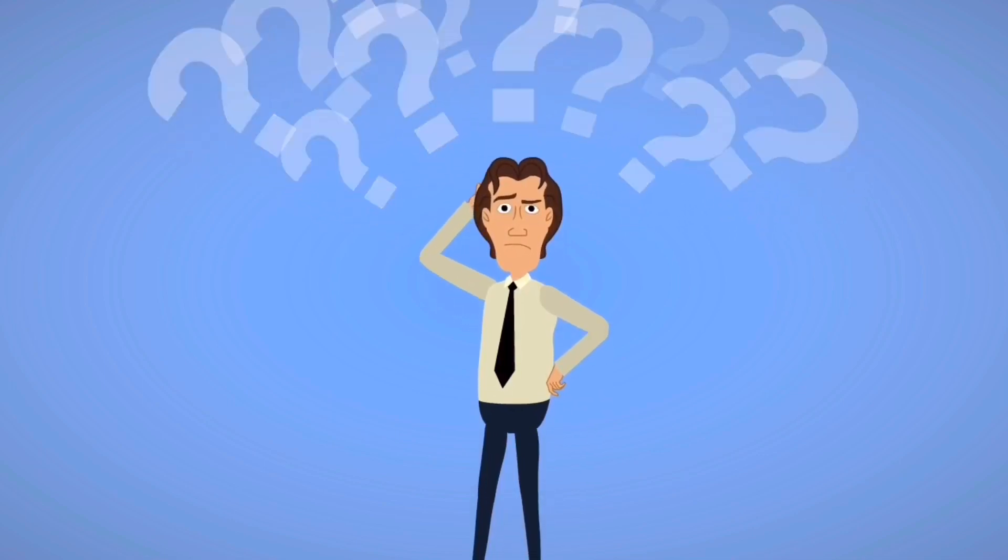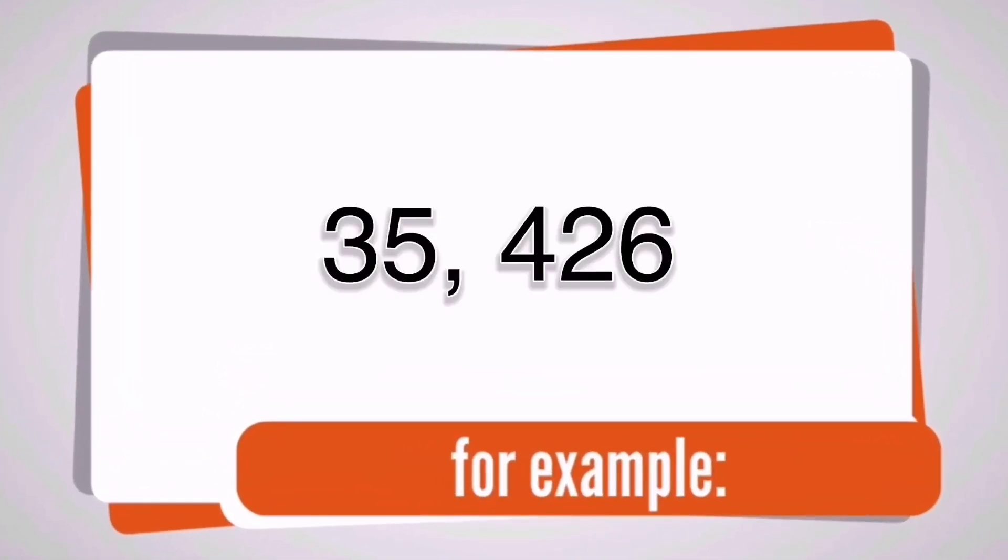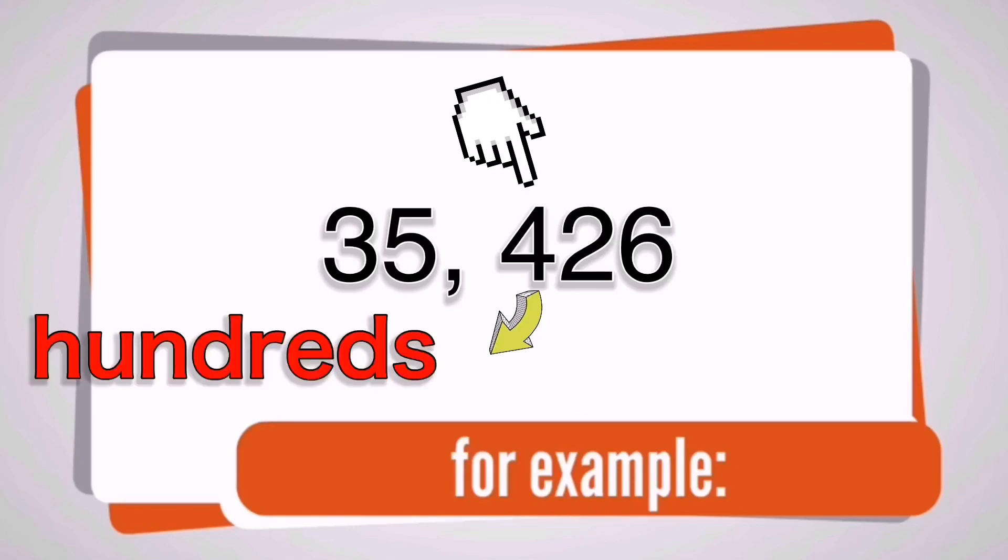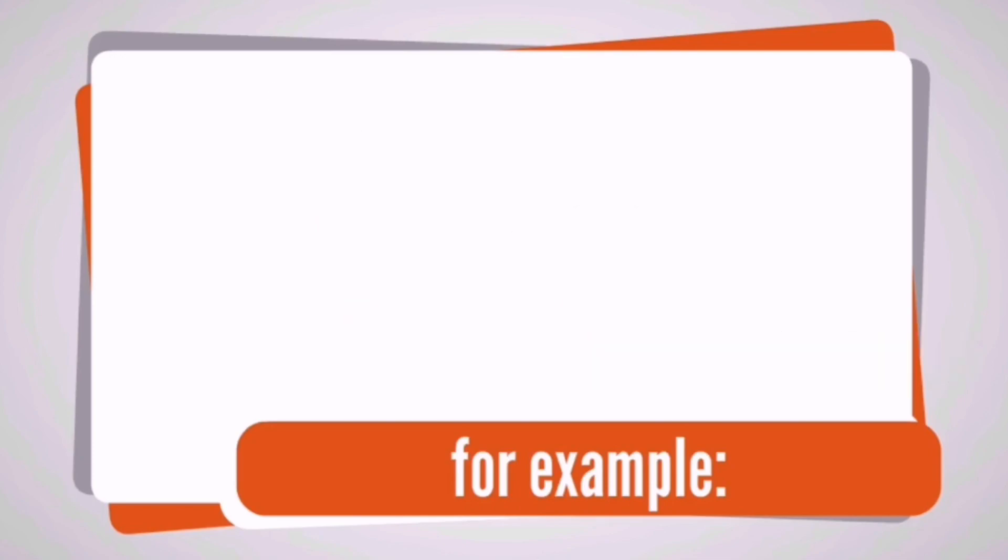To explain more, here is an example of a five-digit number. The place value of the first digit is ones. The place value of the second digit is tens. The place value of the third digit is hundreds. The place value of the fourth digit is thousands. And the place value of the last digit is ten thousands.